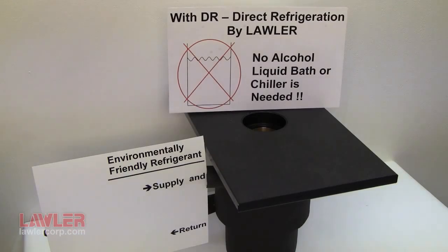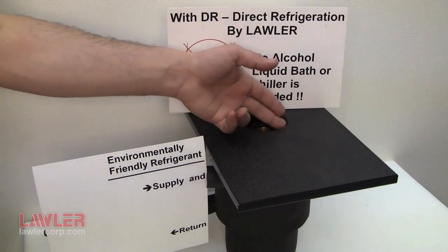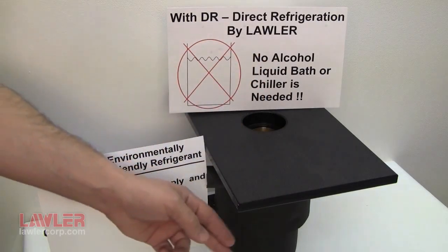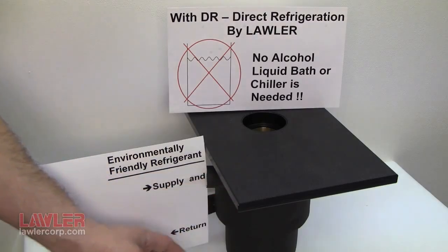Lawler was the first to market direct refrigeration back in the 1990s. Not seen below the top of the instrument and support rack is the metal test jacket. This cutaway shows the insulated jacket and plumbing connections for the refrigerant to flow to a compressor.